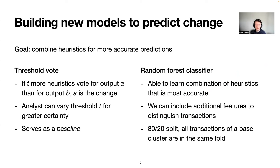Seeing that on average these heuristics are successful, our next goal was to build new models to predict the change by combining the heuristics for more accurate predictions. We look at two mechanisms. The first is a baseline threshold vote: if more heuristics vote for output A compared to output B, then A is likely the change, and you can vary the threshold for how many more votes are required. The second technique is a random forest classifier, which learns the combination of heuristics that is most accurate and can include additional features — such as the time period in which a transaction was created — so that it can account for different heuristic success rates across different epochs.